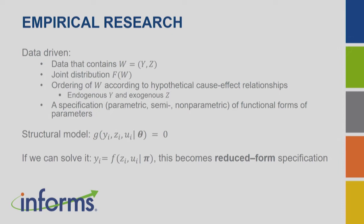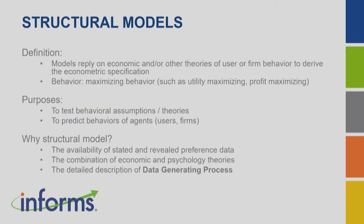The reduced form specification has certain advantages — it is simpler and can help identify model parameters. But the problem is that once we make the transformation, the pi parameters cannot be interpreted directly because they lose the original meaning of theta. Coming back to a formal definition: a structural model is a specification where we rely heavily on economic theory, behavioral theory, or other theories to build a theoretical foundation that reflects the underlying data-generating process.